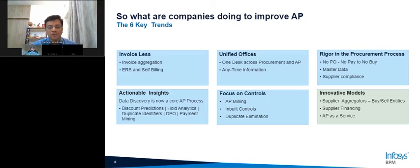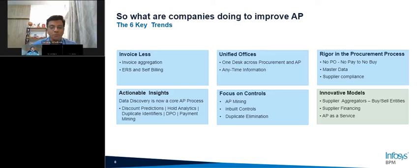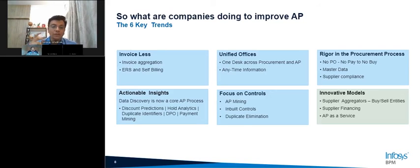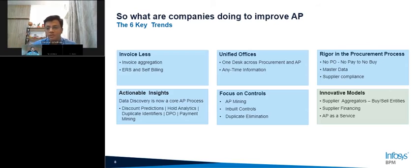An incidental benefit accruing to downstream AP processes is that CPOs and CFOs are collaborating a lot more. We've gone from 'no PO, no pay' to 'no PO, no buy' — stringent adherence to documentation before a purchase, including P-cards. The second big area of focus is master data: not only are more controls being enforced when suppliers are set up, but we're seeing major adoption of data cleansing and data governance — keeping data clean. The downstream impact of these procurement improvements is making accounts payable a much better process.